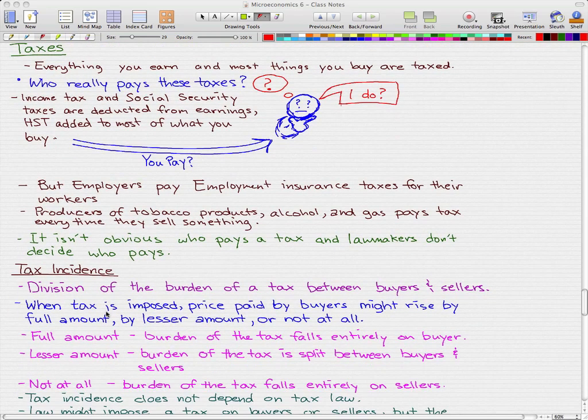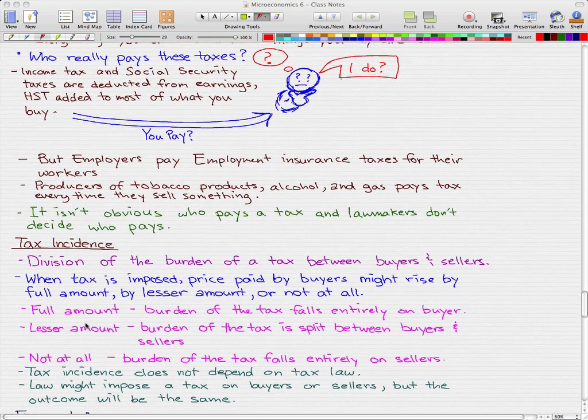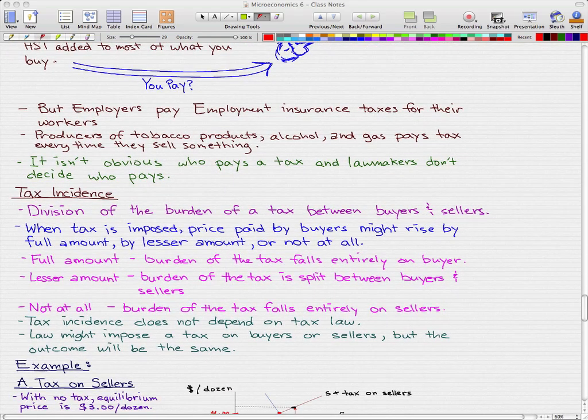Now let's focus on tax incidence. Tax incidence is the division of the burden of a tax between buyers and sellers. When a tax is imposed, the price paid by buyers might rise by the full amount, by a lesser amount, or not at all.